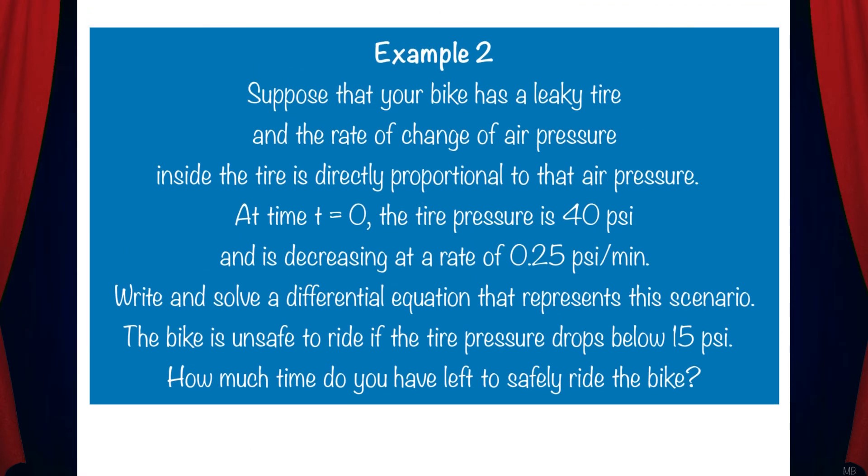Let's do another example. Suppose that your bike has a leaky tire and the rate of change of air pressure inside the tire is directly proportional to that air pressure. At time t equals 0, the tire pressure is 40 psi and is decreasing at a rate of 0.25 psi per minute.